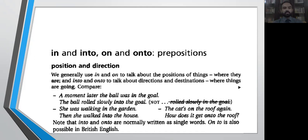Another sentence: 'She was walking in the garden,' 'The cat's on the roof again,' or 'Then she walked into the house,' 'How does it get onto the roof?' It's quite clear that we are using 'in' and 'on' for positions.